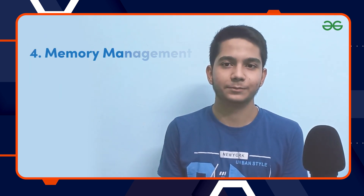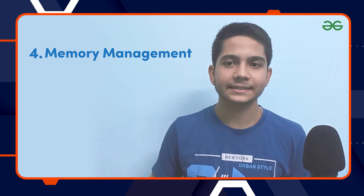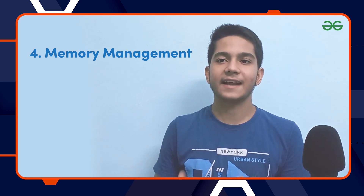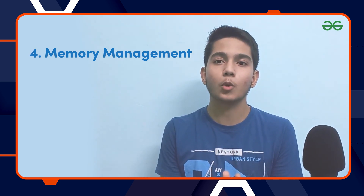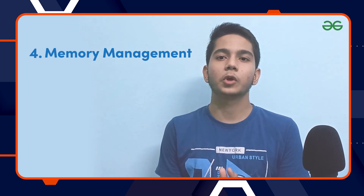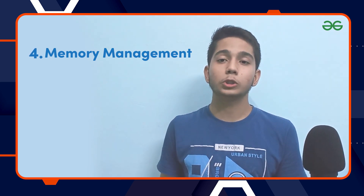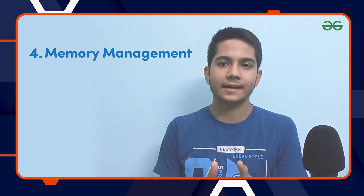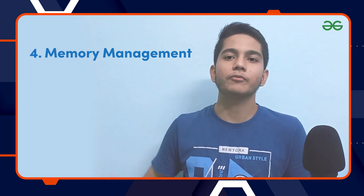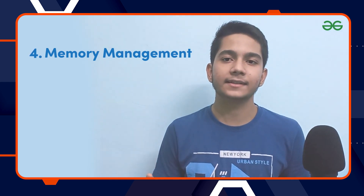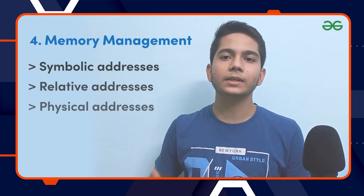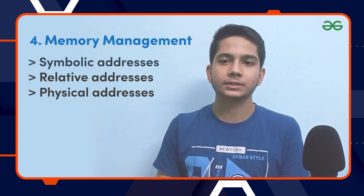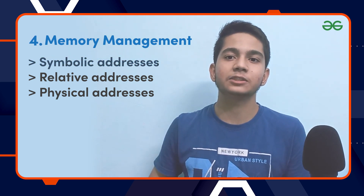The fourth concept is memory management. Memory management is a functionality of an operating system that handles and maintains the primary memory. Every memory location is tracked by memory management — it checks how much memory is allocated to a process, decides which process gets memory at what time, and updates whenever memory is freed or unallocated. The operating system maps the logical address into physical address at the time of memory allocation. Mainly there are three kinds of addresses used in a program: symbolic address, which is used in source code and includes variable names, constants, and instruction labels.